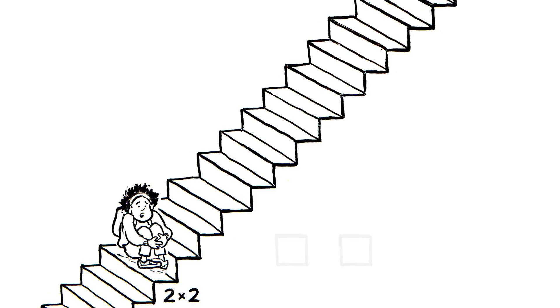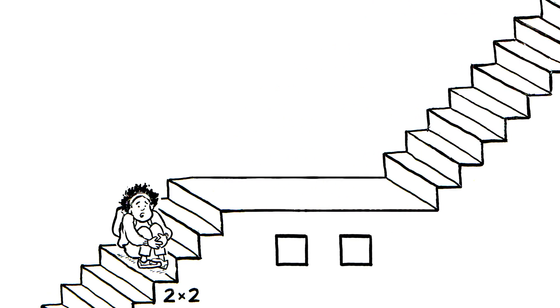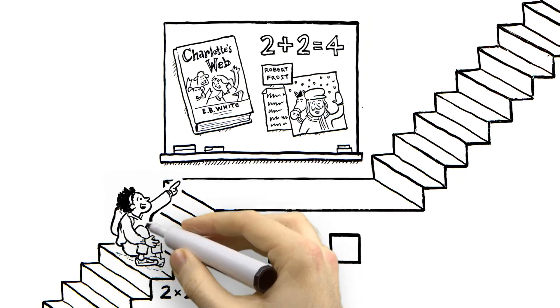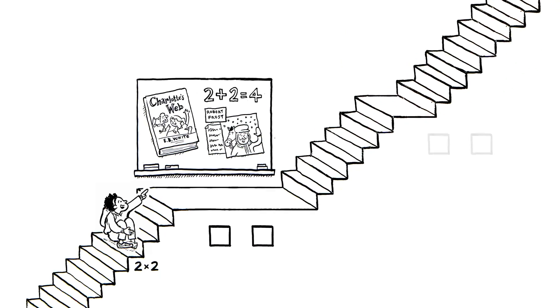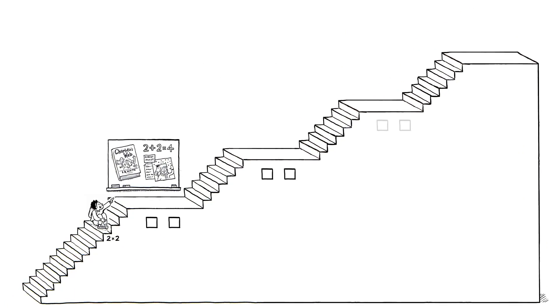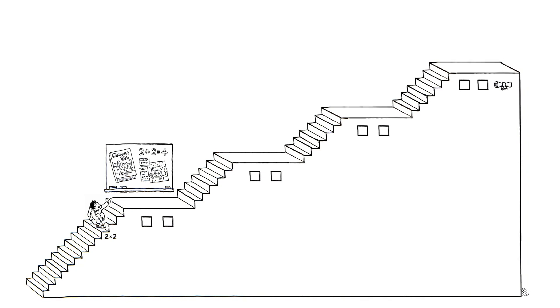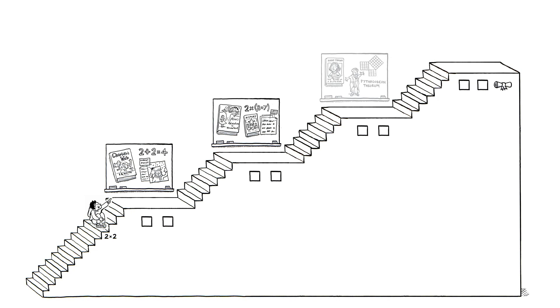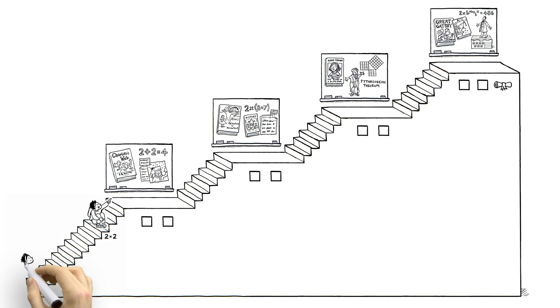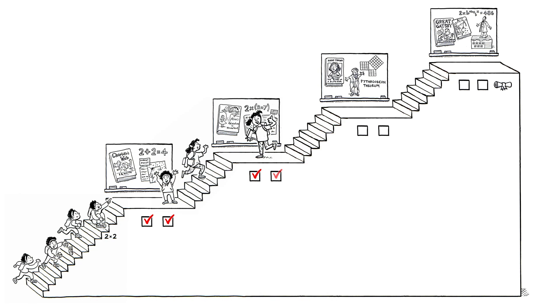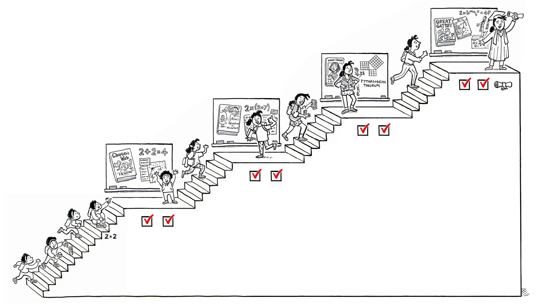First, each standard creates a landing on the staircase, a stop along the way as your child heads toward high school graduation. Each stop is a chance for every parent and teacher to focus on the skills their students are supposed to know at that step, no matter the zip code, language, or race. And more importantly, each standard makes sure all students are learning what they need to know to get to graduation and beyond.